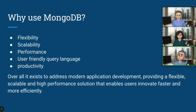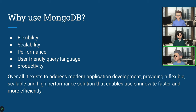Why would we use MongoDB? Basically it's a highly flexible system. Traditional relational databases are based on rigid schemas, which can be restrictive when dealing with unstructured data. MongoDB's document-oriented model allows for flexible schema design, enabling developers to store and query data in a way that closely matches the structure of their application objects. It's highly scalable, has great performance, and a really user-friendly development language. Overall it exists to address modern application development, providing a flexible, scalable, and high-performance solution that enables users to innovate faster and more efficiently.